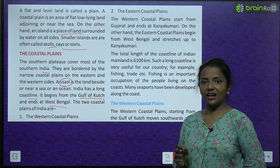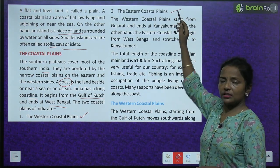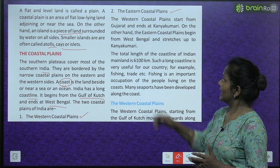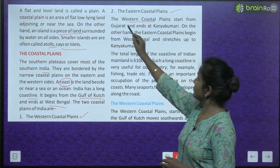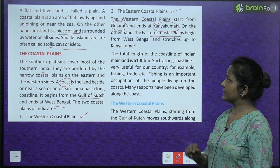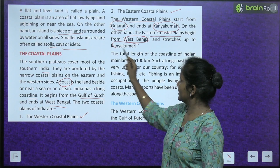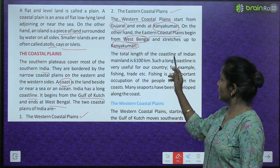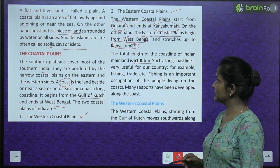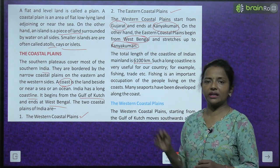The two coastal plains of India are: the western coastal plains and the eastern coastal plains. The western coastal plains start from Gujarat and end at Kanyakumari. On the other hand, the eastern coastal plains begin from West Bengal and stretch up to Kanyakumari. The total length of the coastline of the Indian mainland is 6,100 km.